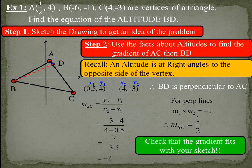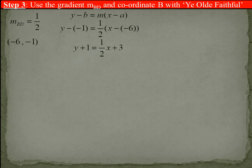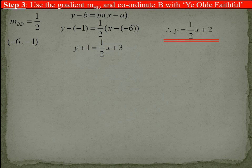Check that the gradient fits with your sketch. Step three is you use the gradient and coordinate B with what I call your faithful, to find the equation. Sub it in, watch double negatives, these are common areas where mistakes are made, and give the equation in its standard form at the end. y equals a half x plus two, which fits our diagram.